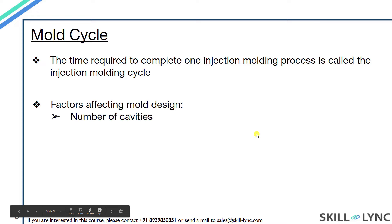The first factor is the number of cavities. The number of cavities is the number of parts that will be produced in each cycle. It is possible to create 2, 4, 10, or even 64 parts using a single tool in one single cycle, and the more the number of cavities, the higher will be the cycle time.